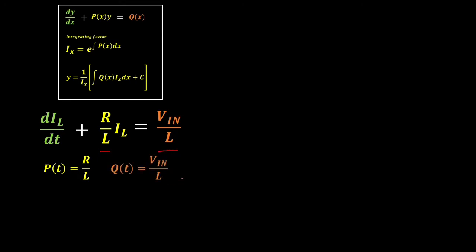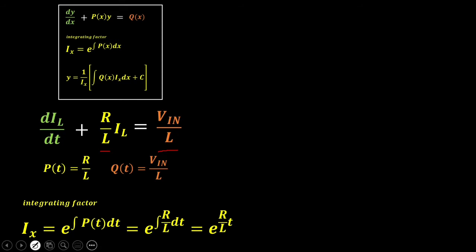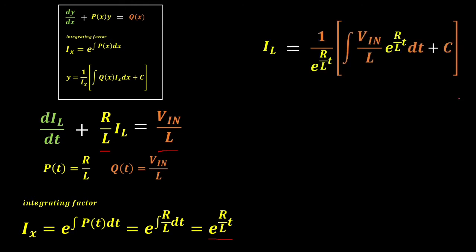For the integrating factor, we have I_x equal to e raised to the integral of p(t) dt, which gives us e raised to the integral of (R/L) dt. Evaluating that, we have e raised to (R/L)·t. Using our integrating factor and q(t) in the final solution, we have the inductor current equal to 1 over the integrating factor, multiplied with the integral of (VIN/L) times the integrating factor dt, plus a constant.